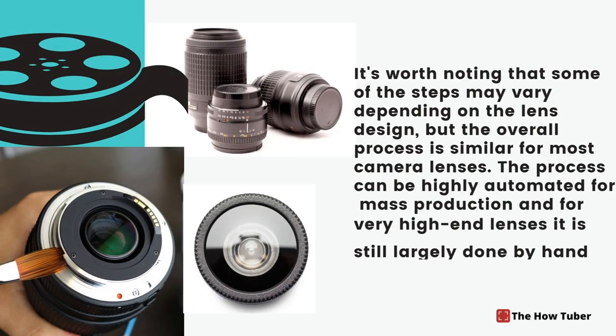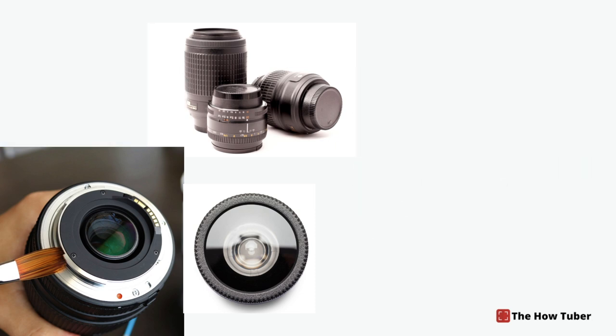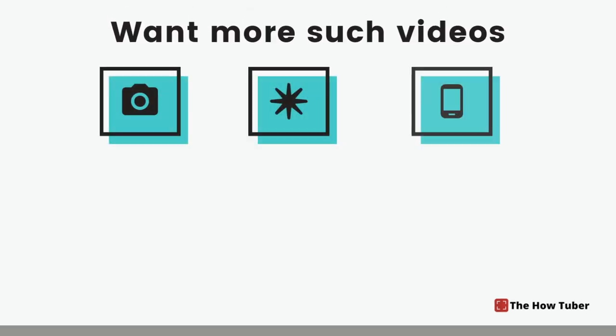It's worth noting that some of the steps may vary depending on the lens design, but the overall process is similar for most camera lenses. The process can be highly automated for mass production, and for very high-end lenses it is still largely done by hand by skilled craftsmen.